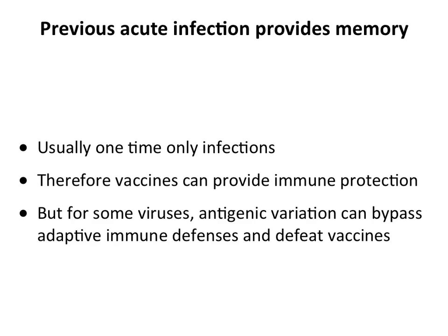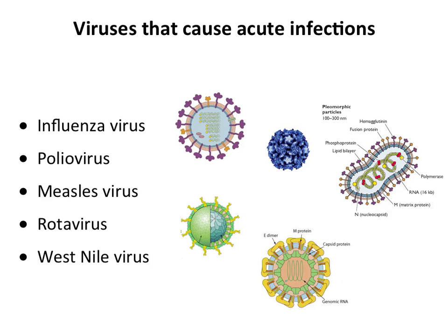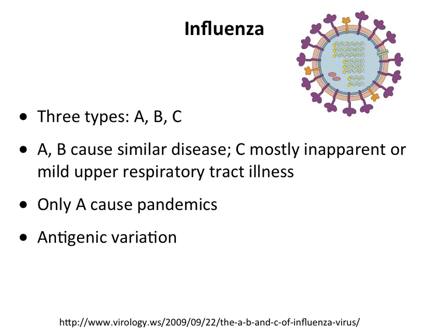The best way to illustrate acute infections is to go through specific examples. We're going to cover influenza virus, polio, measles, rotavirus, and West Nile virus. Flu, measles, and West Nile are enveloped; rotavirus and polio are non-enveloped. These are all RNA viruses. Influenza has three types: A, B, and C. Vaccines always contain an A and a B type. All pandemic strains are influenza A, which undergoes the most variation and causes the most disease.